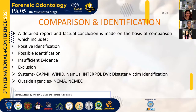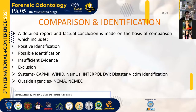A post-mortem dental record chart is then filled in. For comparing antemortem and post-mortem records, this can be done manually or using computers. A detailed report and factual conclusion is made based on the comparison, which includes a positive identification, possible identification, insufficient evidence and exclusion. We have different systems for identification: CAPME, which is Computer Assisted Matching of Unidentified and Missing Persons; VINIT, a system for matching unidentified and missing persons; NAMAS, which is the National Missing and Unidentified System; and the most recognized — Interpol Disaster Victim Identification. Other agencies involved are NCMA, the National Center for Missing Adults, and NCMEC, the National Center for Missing and Exploited Children.